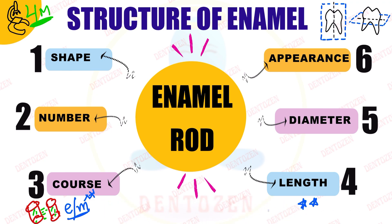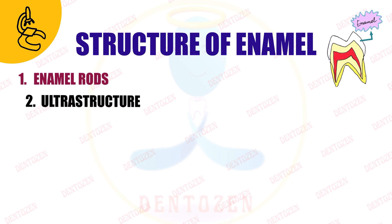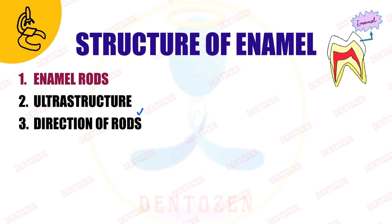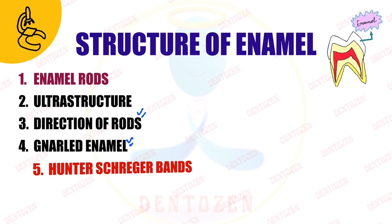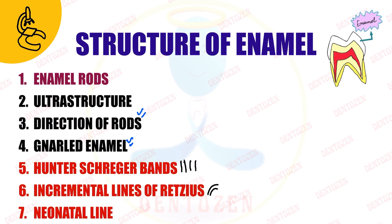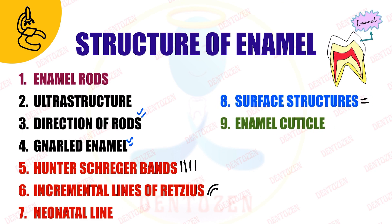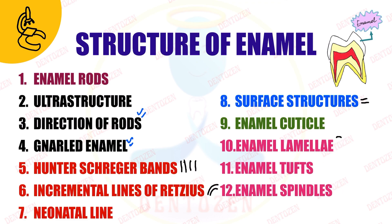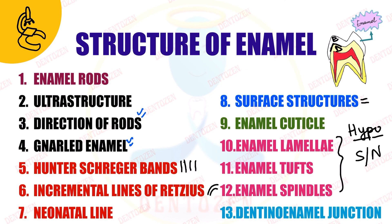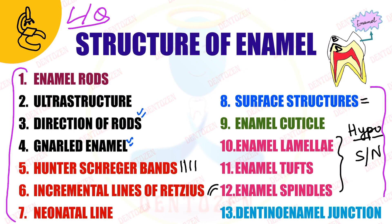The structure of enamel includes enamel rods, ultrastructure of enamel, direction of rods, gnarled enamel, Hunter-Schreger bands, incremental lines, neonatal line, surface structures, enamel cuticle, enamel lamellae, tufts, and spindles — together called hypocalcified structures of enamel. We can also talk about the dentino-enamel junction. If you get a long question on the structure of enamel, you have to cover all these things. We will discuss them one by one in separate videos with diagrams.